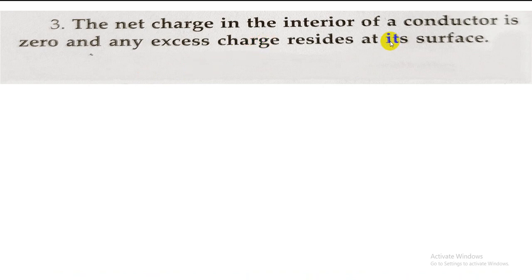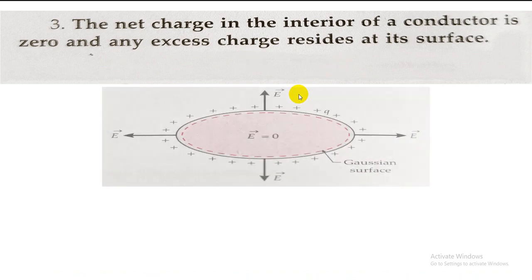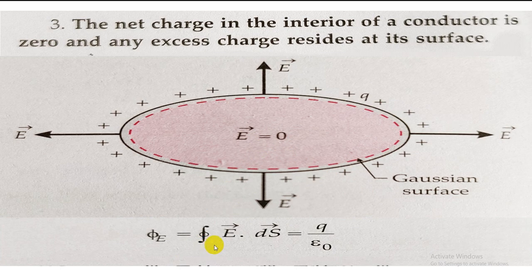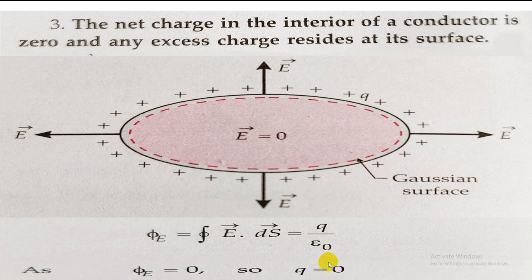Next point: the net charge in the interior of a conductor is zero, and any excess charge resides at the surface only. To understand this, take a conductor of any shape and draw a Gaussian surface shown by the dotted line inside it. Inside the Gaussian surface, the electric field is zero, as we just proved. Applying Gauss's theorem: the integral of E·dS equals Q/ε₀. Since E is zero, Q/ε₀ equals zero, which means Q equals zero — the charge inside the conductor is zero.